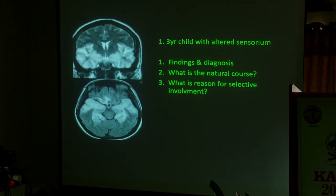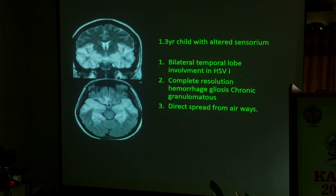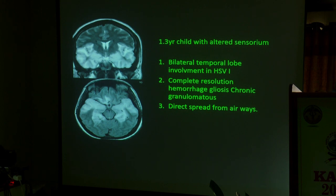Herpes — it is herpes encephalitis. What is the natural course of the disease? Natural course can be complete resolution. Second, you can have hemorrhagic gliosis changes. Third, you will have chronic granulomatous disease. Which patients will turn into chronic granulomatous disease? Whenever there is immunodeficiency — hyper-IgM or similar immunodeficiency — we will have chronic granulomatous changes.